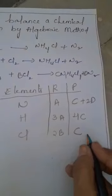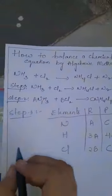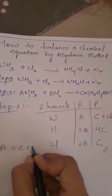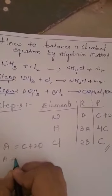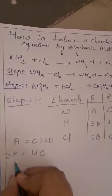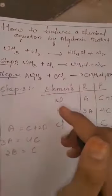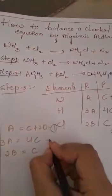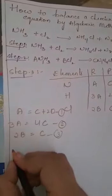After completing this, we need to equate the reactants and product side. The equations are: A is equal to C plus 2D (1st equation), 3A is equal to 4C (2nd equation), and 2B is equal to C (3rd equation).